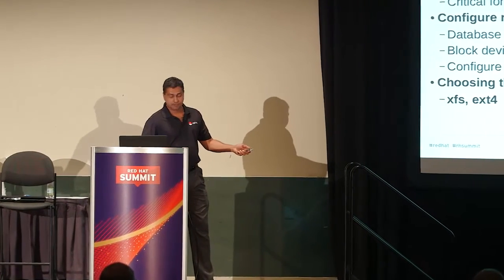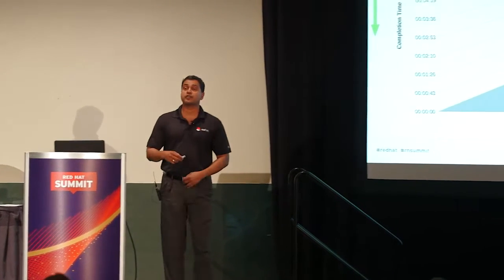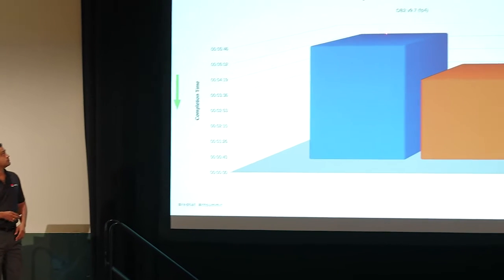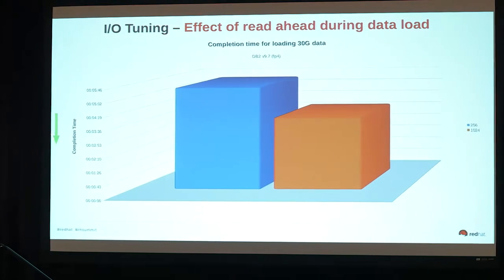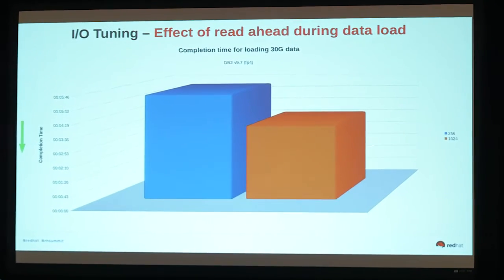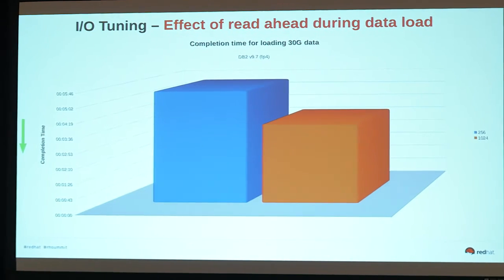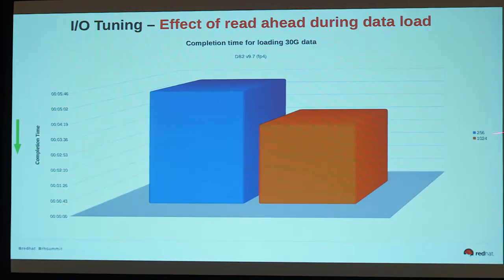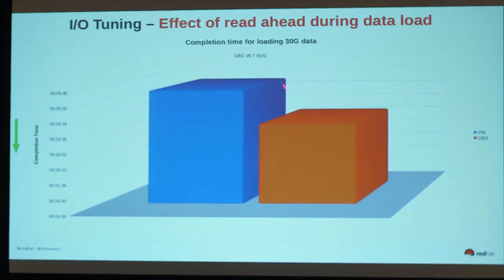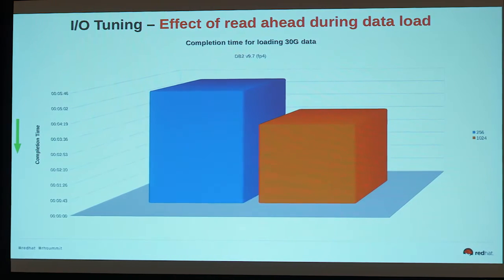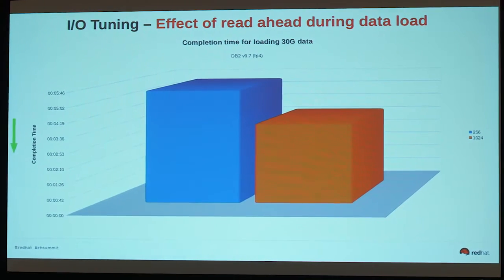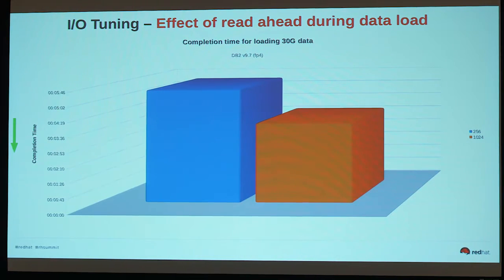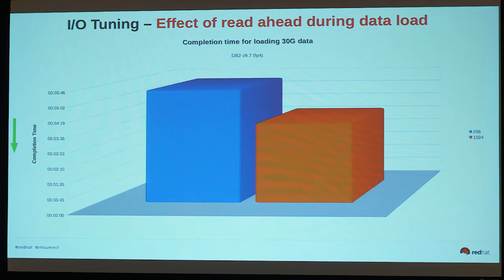I was loading a 30 GB flat file into my DB2 V9 FP4 database. The default setting for read-ahead was 256 half-kilobyte sectors. When I bumped it up to 1024, I improved my load time by about 30%, because now I was reading larger chunks of the file. As you know, a larger transfer size gives you better throughput. By changing the block device read-ahead, we tell it to read bigger chunks so it reads faster and loads data faster.